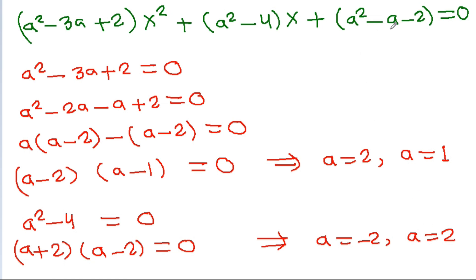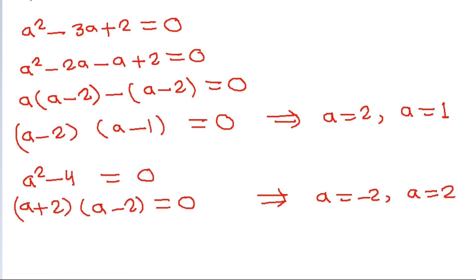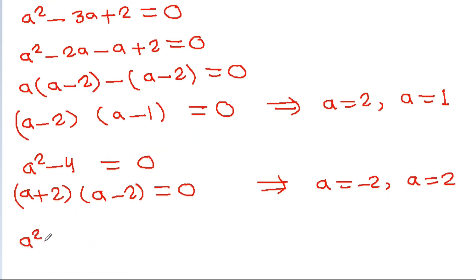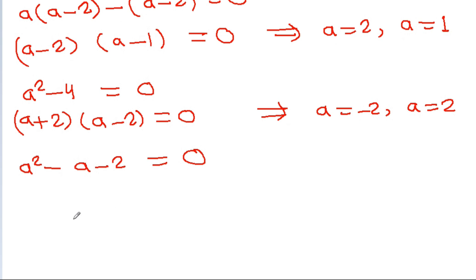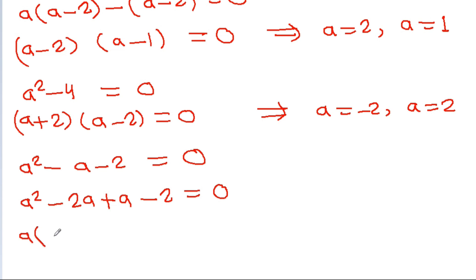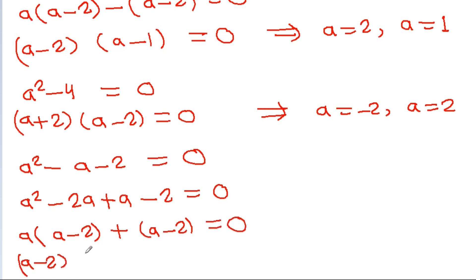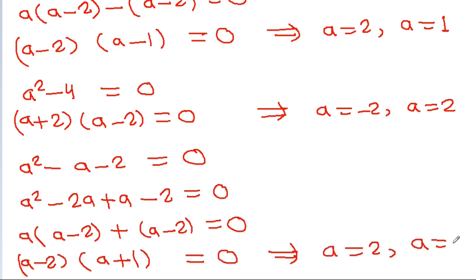For the constant term a² - a - 2 = 0, we can factor it as (a - 2)(a + 1) = 0, giving a = 2 and a = -1.